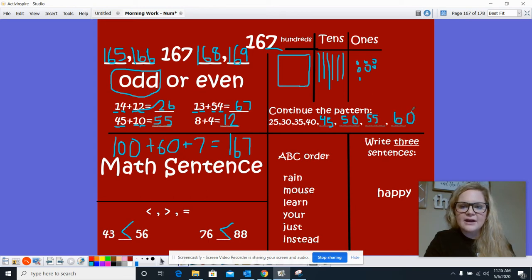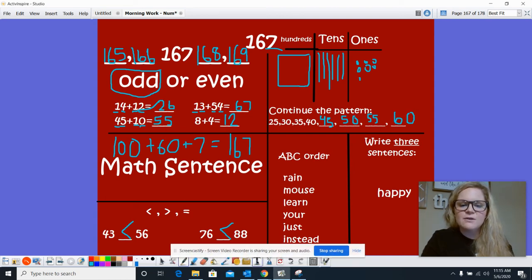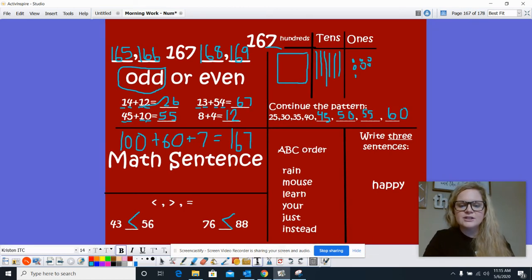Let's take a look at our ABC order for today. We have the words rain, mouse, learn, your, just, instead. All right. So let's take a look. So instead would go first. Capitalized on that. All right.